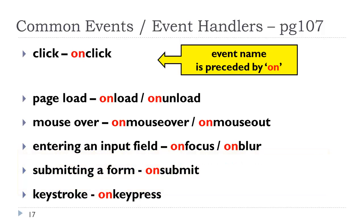In JavaScript we have click events, double-click events, page loads, page unloads, mouse over, mouse out, mouse up, mouse down, mouse move, entering an input field which is called focus, exiting that which is called blur, submitting a form which is called submit, key press, key down, key up — there's a lot of them. In JavaScript these events are preceded by the word 'on'. We will see later on in jQuery they are not preceded by 'on' — they're called for what they are. In JavaScript we precede the name of an event with 'on'.